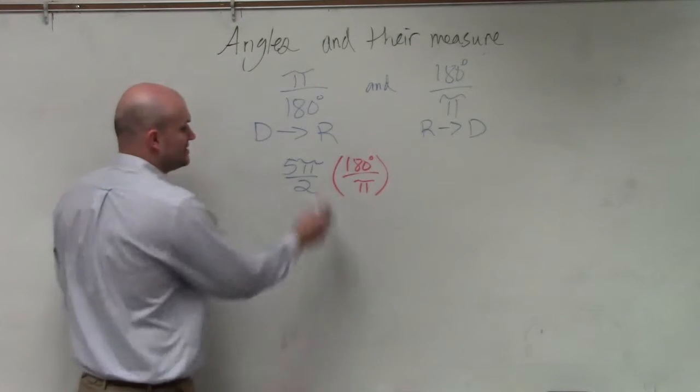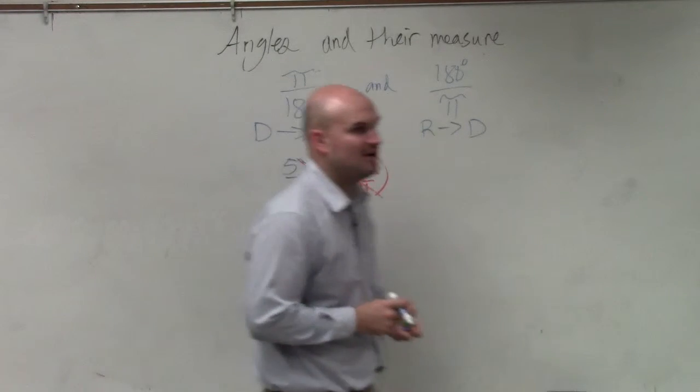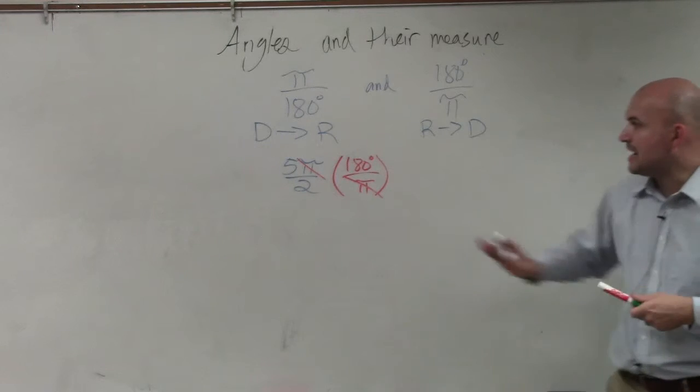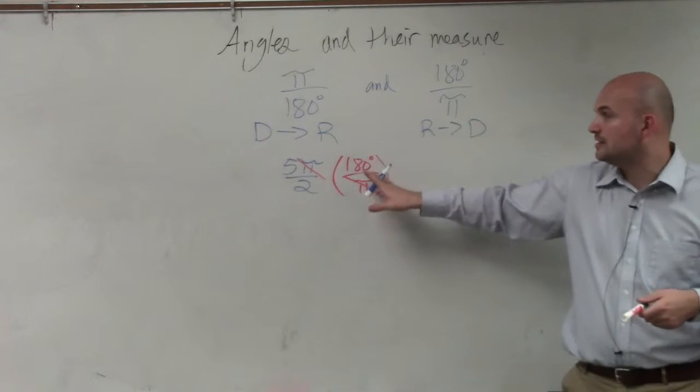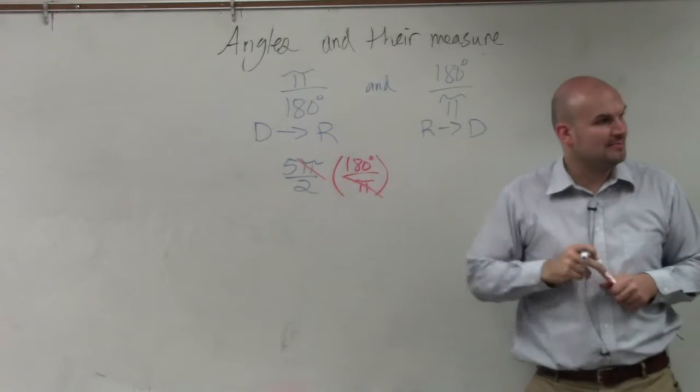What's nice about this, the division property applies. Pi divides out. Then all I simply need to do now is multiply 5 times 180 and then divide it by 2.